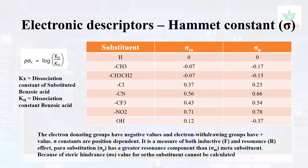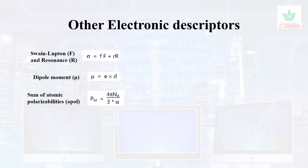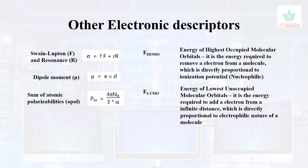In these three features we should know the next electronic descriptors: Swain-Lupton resonance effect, dipole moment, sum of atomic polarizabilities, and the pole. E-HOMO is the energy of the highest occupied molecular orbital. Nucleophilic substitution correlates with E-HOMO. Electrophilic substitution correlates with E-LUMO.